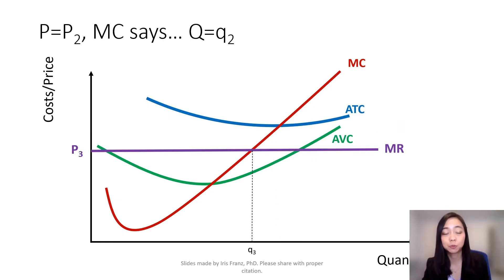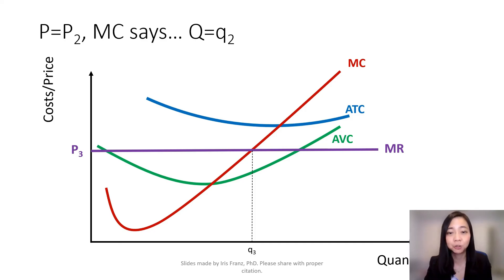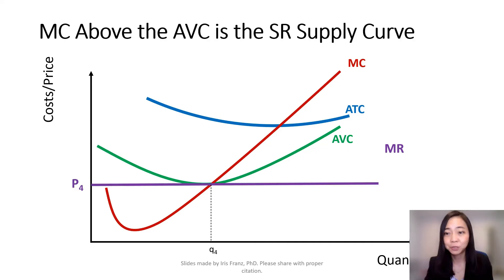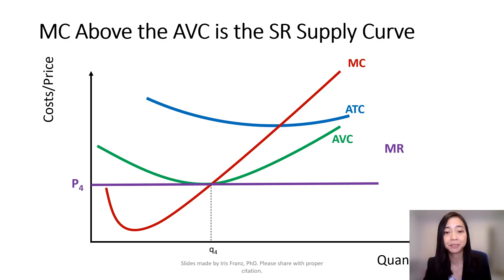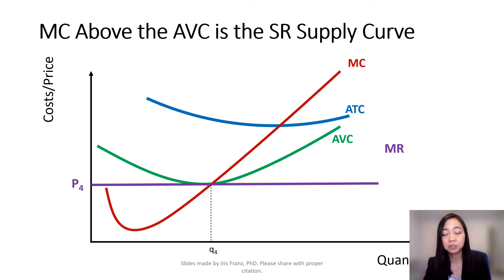Now the price drops to P3. Your marginal cost curve tells you you should produce Q3. Now suppose your price drops to P4 — your marginal cost curve will tell you: given P4, you should produce Q4.